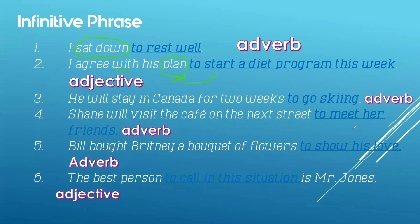How about number three? 'He will stay in Canada for two weeks to go skiing.' What is the word modified? Does it refer to Canada or weeks? No — rather, it modifies the verb 'will stay.' Why will he stay in Canada for two weeks? To go skiing — answering the question why.